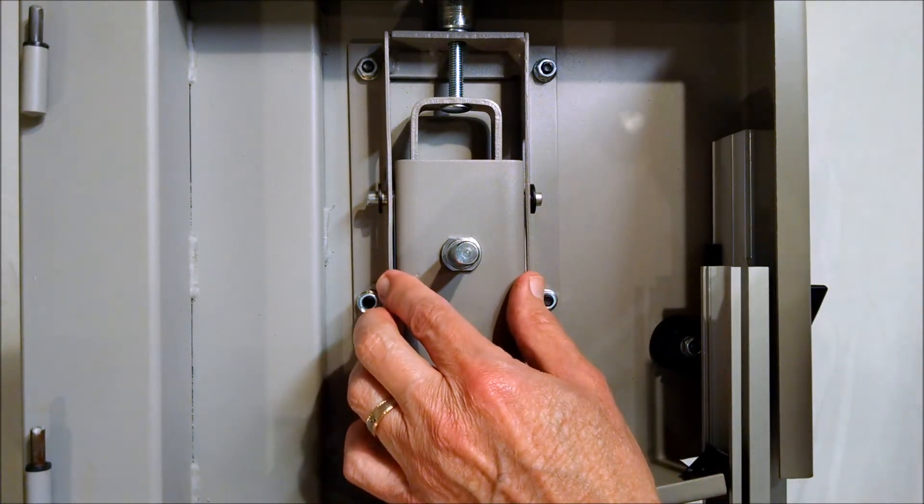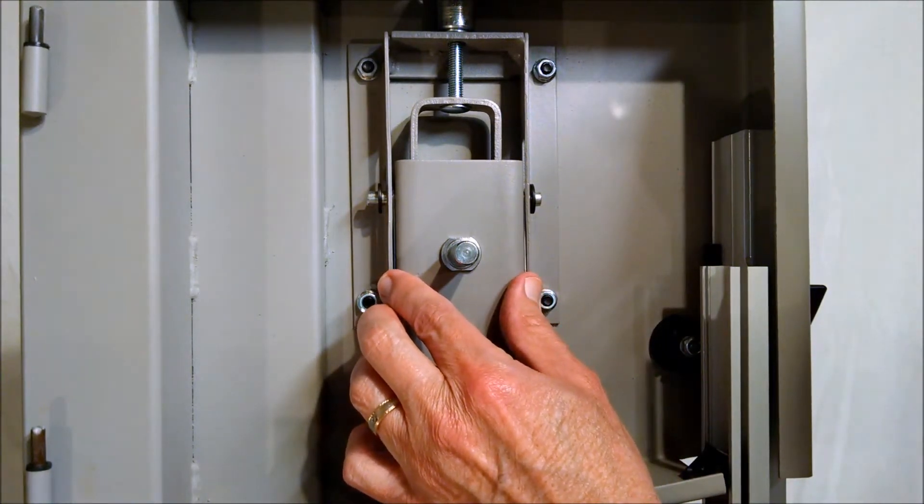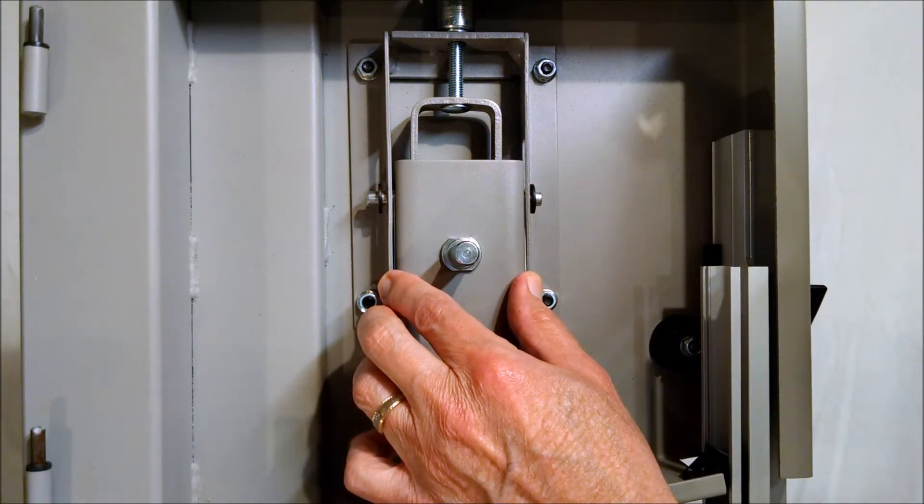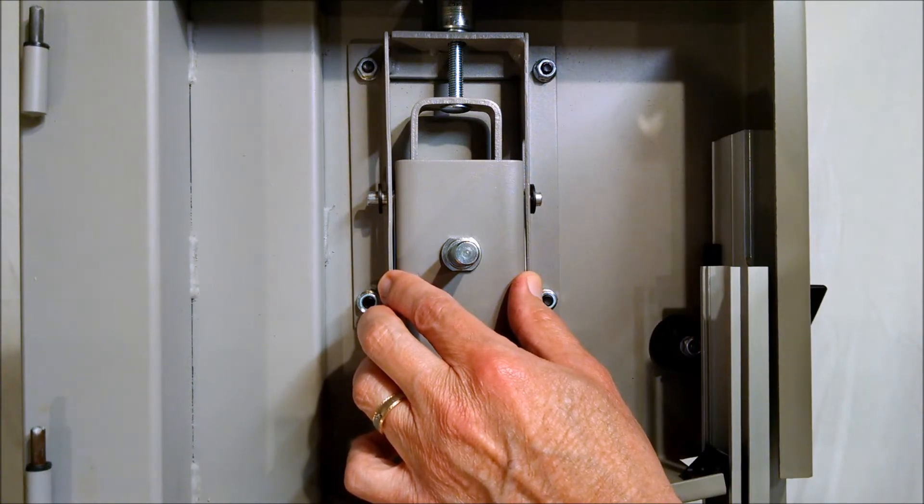Now with both shims in place, we can see that we have eliminated sideways movement. That means my blade should be in perfect alignment and be able to hold that alignment.